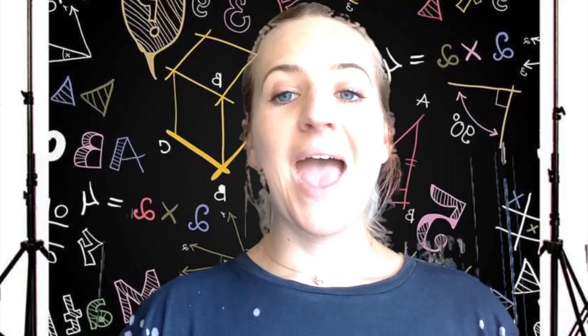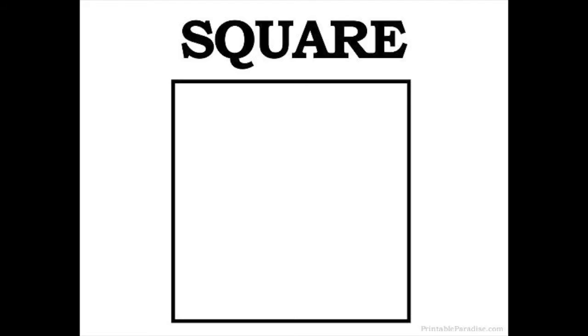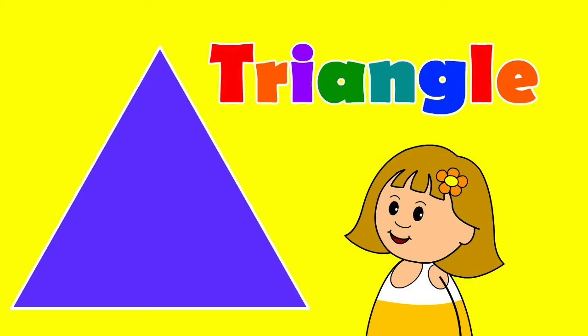Now, let's look at this square. How many pointy vertices does this square have? That's right, one, two, three, four. What about this triangle? How many pointy vertices does this triangle have? That's right, one, two, three.